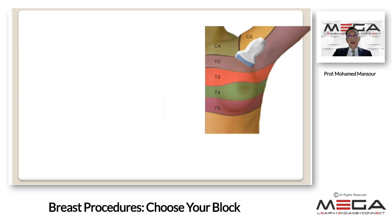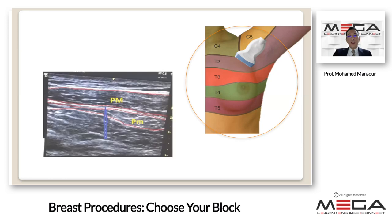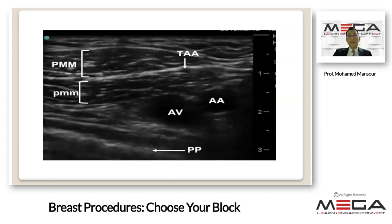To perform this block, a high-frequency linear ultrasound probe is used at the mid-clavicular level. The second, third, and fourth ribs are identified by maneuvering the probe to identify the pectoralis major and minor muscles. Local anesthesia is placed in the fascial plane between the pectoralis major and pectoralis minor muscle, in the space visible between them on ultrasound.